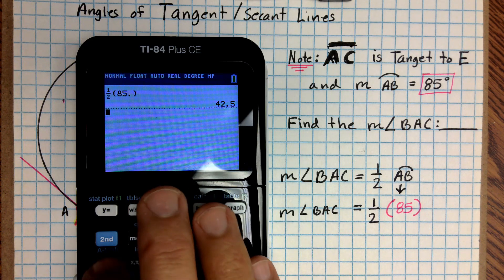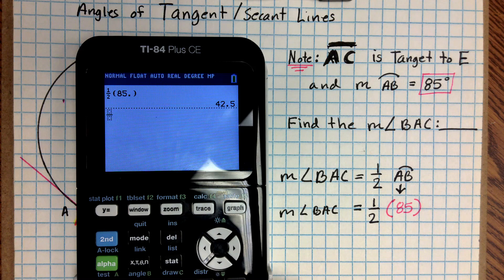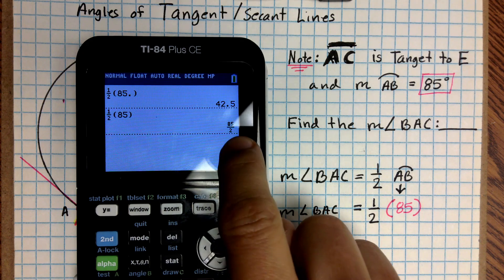If you didn't put a decimal in there, let me show you what would happen. And that's because I didn't want to get a fraction as an answer. So if I would have just put in there 85 and hit enter, it would have given me this fraction right here.